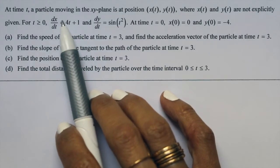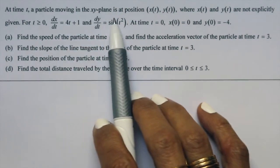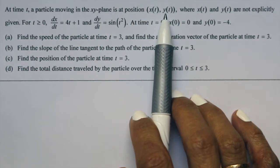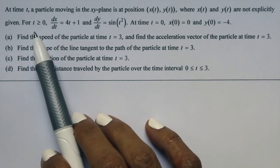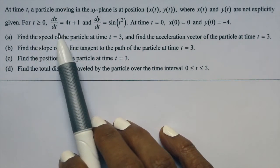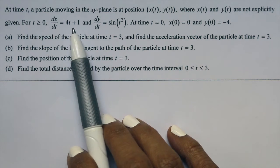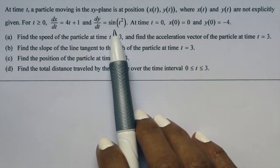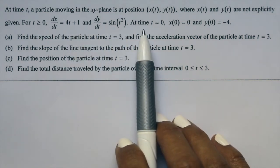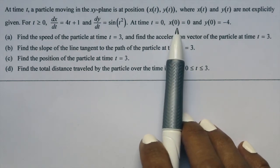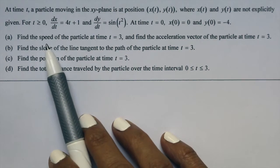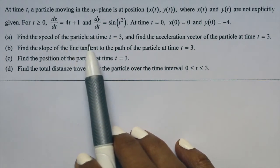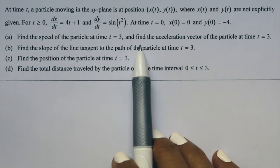This problem says at time t, a particle moving in the x-y plane is at position x(t), y(t), where x(t) and y(t) are not explicitly given. For t greater or equal to 0, dx/dt is given as 4t plus 1, and dy/dt is given as sine of t squared. At time t equals 0, the initial condition is x(0) equals 0 and y(0) equals negative 4. Part A says find the speed of the particle at time t equals 3, and find the acceleration vector of the particle at time t equals 3.